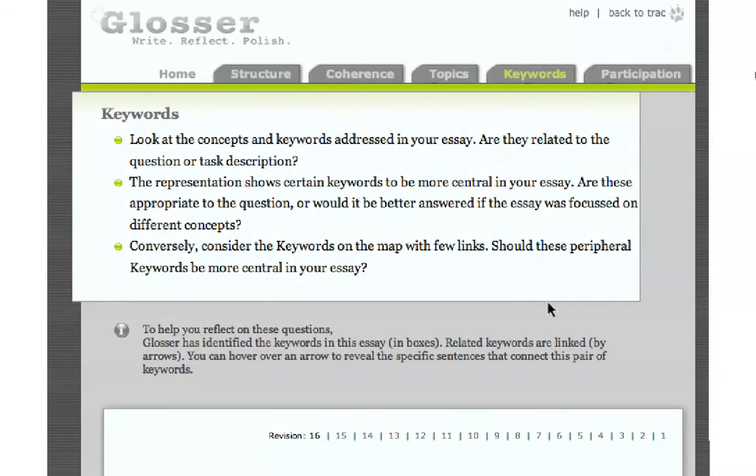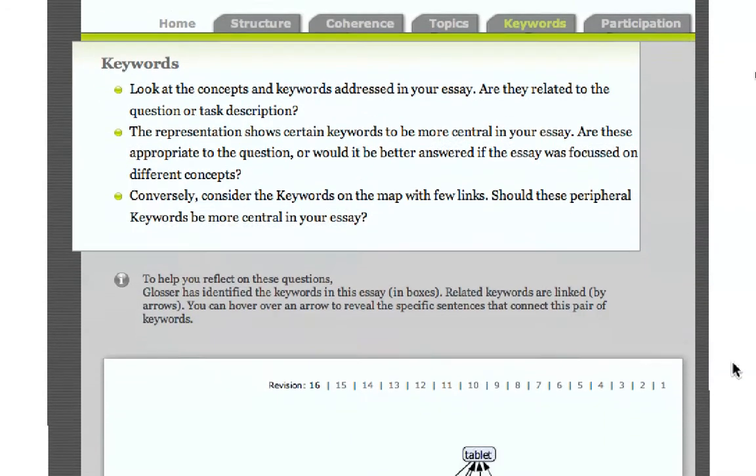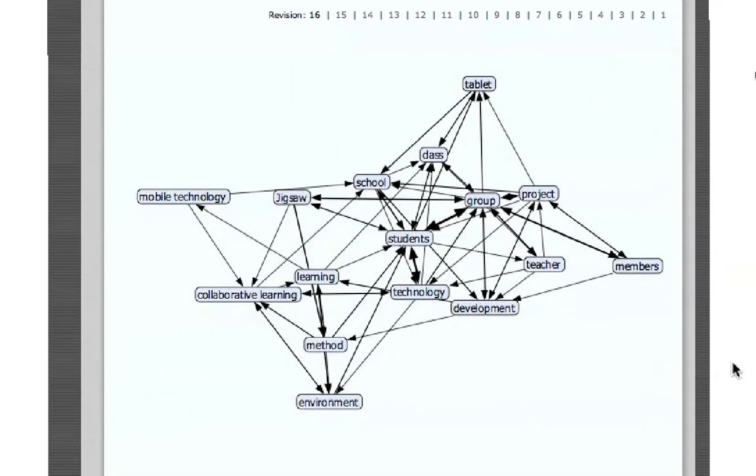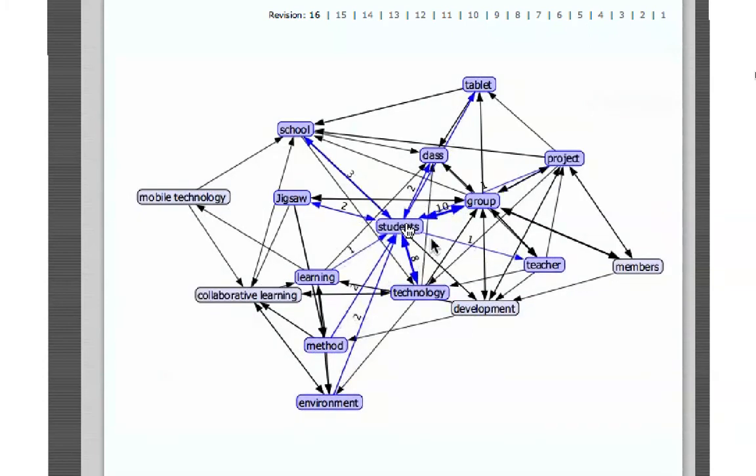The keyword section takes a concept map look at the essay. It's a visualization of the keywords and the relationships between them. In this way, isolated concepts that aren't well integrated can be easily spotted, as can concepts that are very central to the essay and seem to relate to almost everything else.